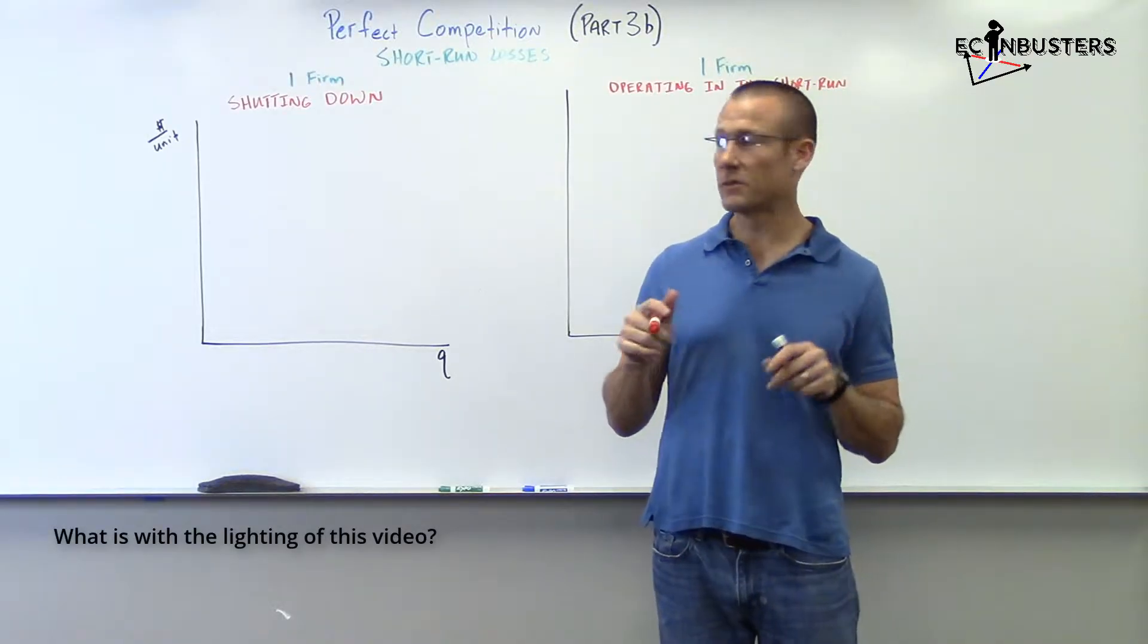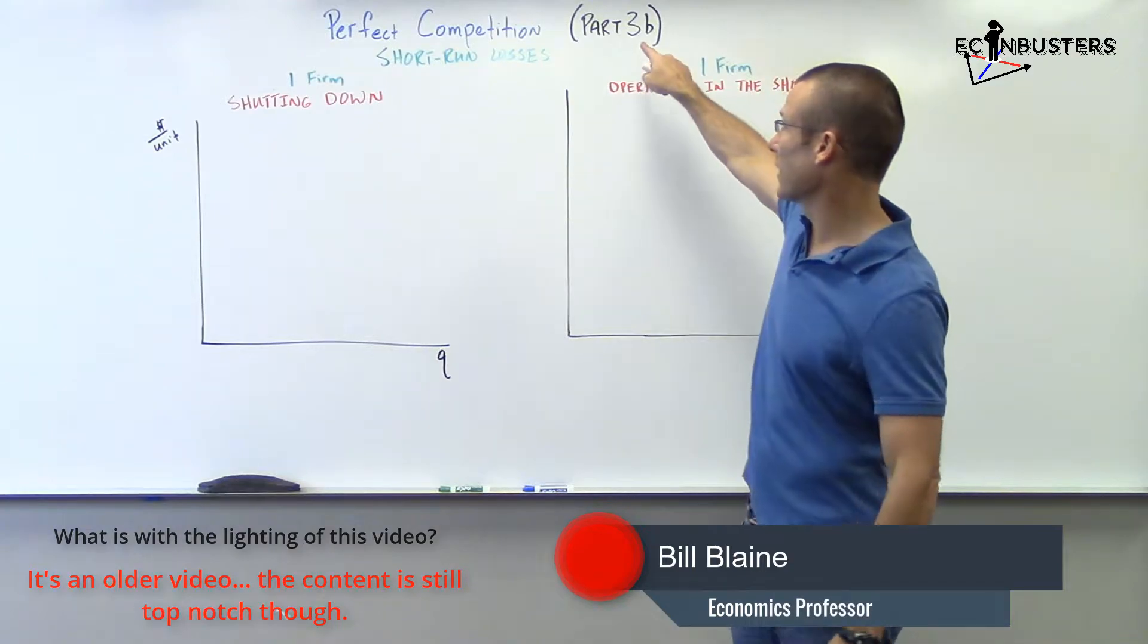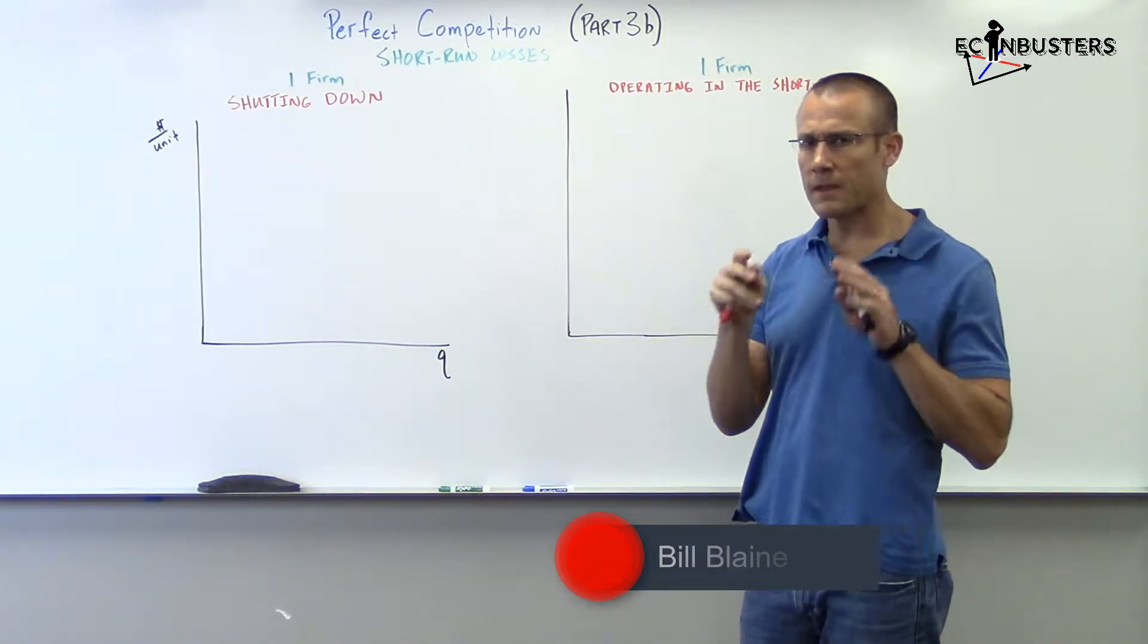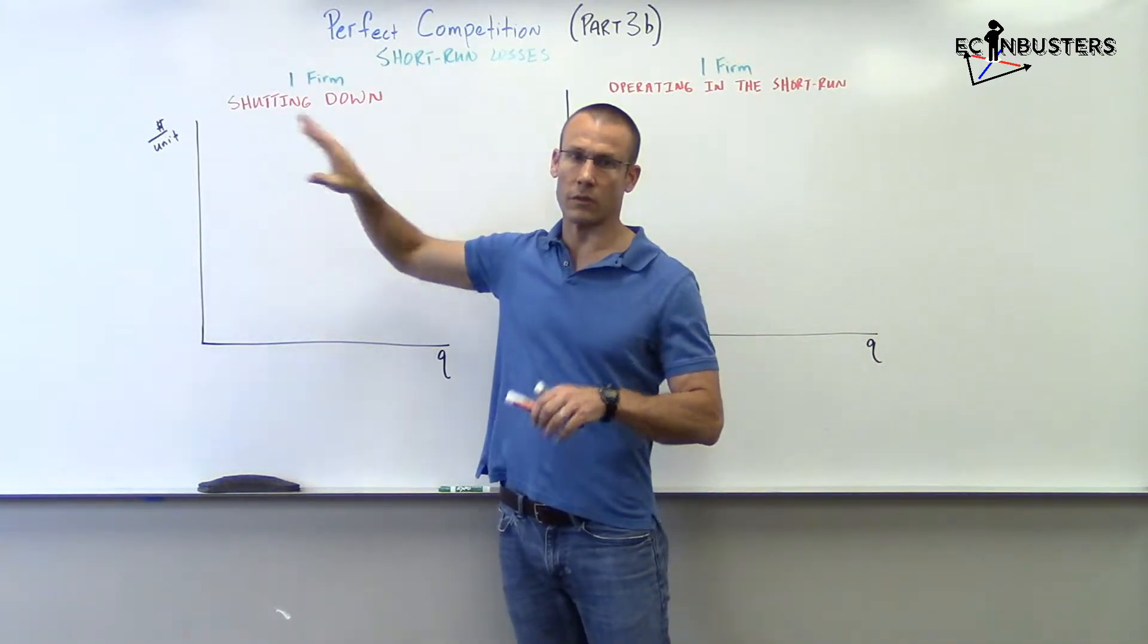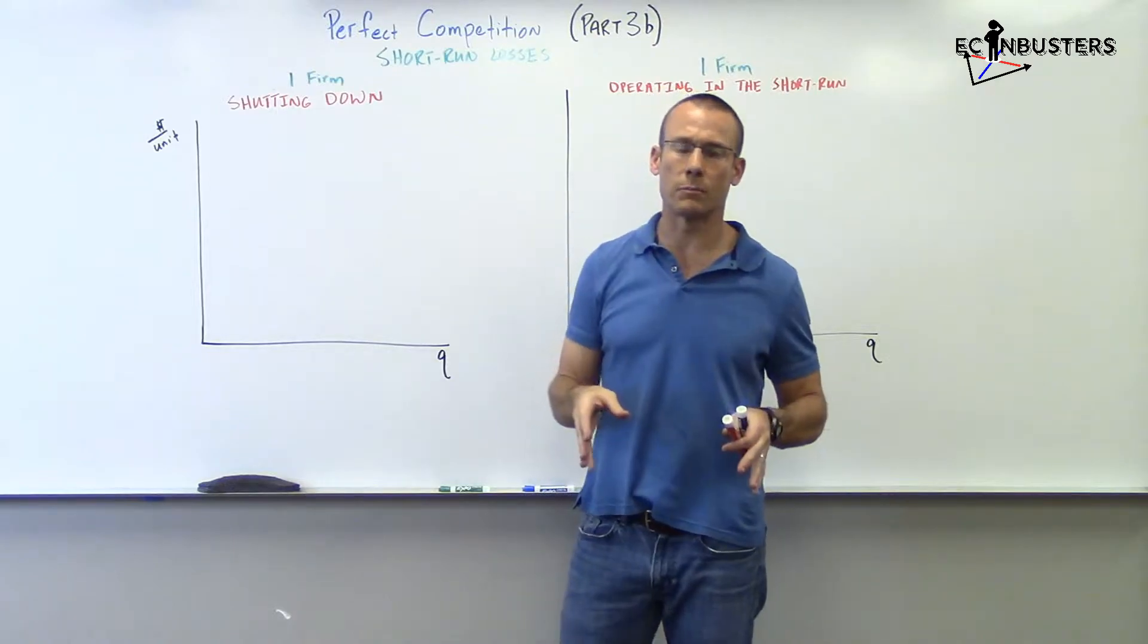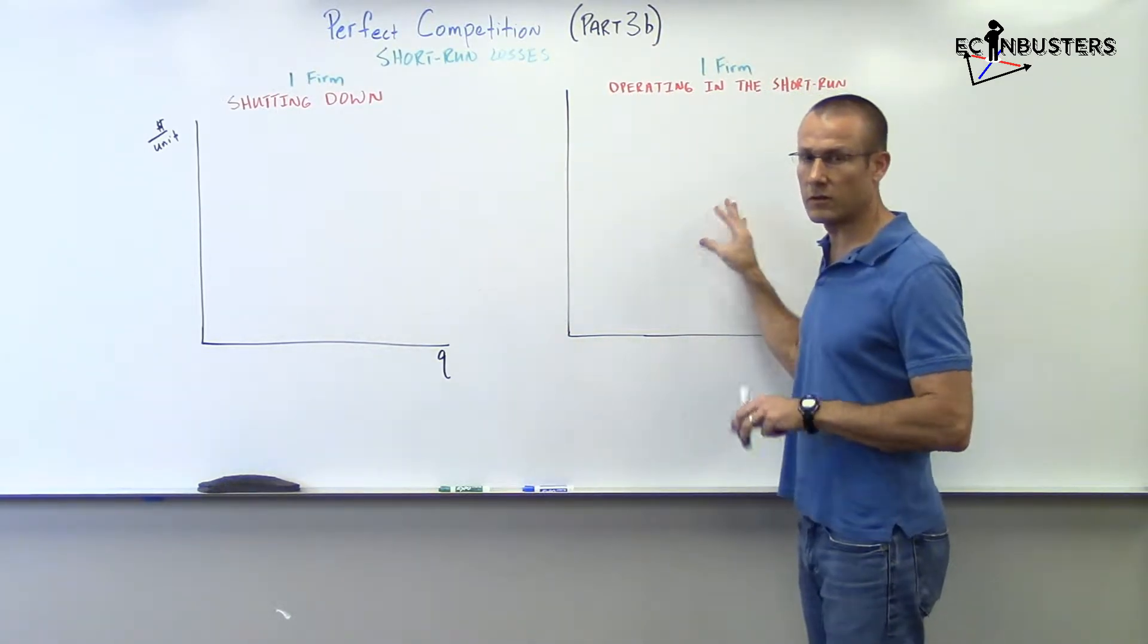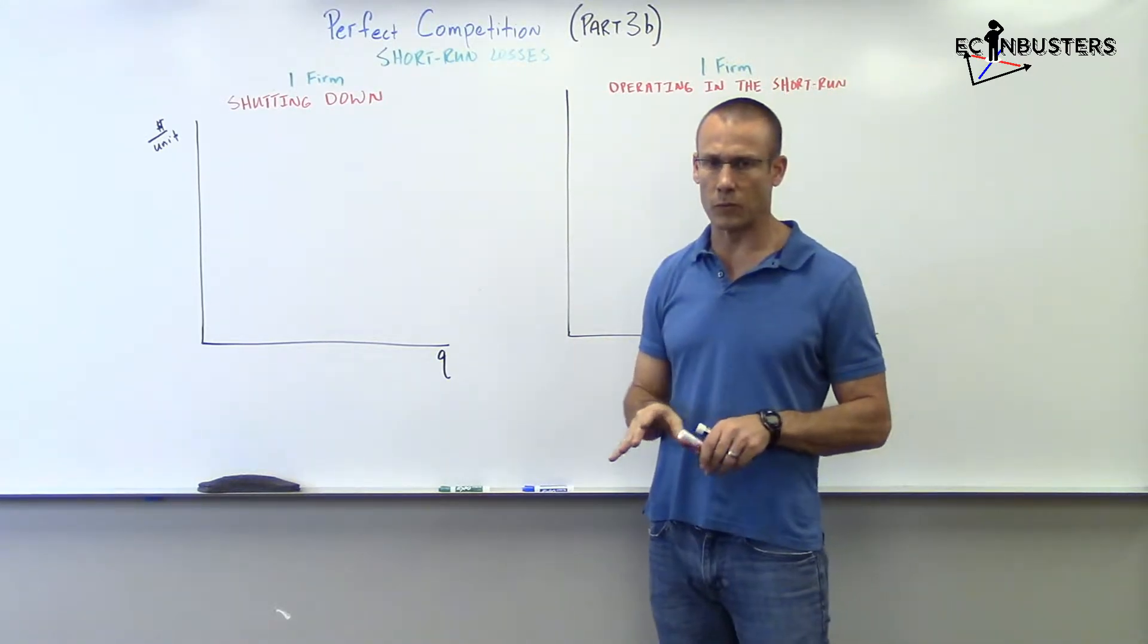Hey, everybody. Still on Perfect Competition. We're doing short run losses. We just shot a video on it. This is kind of 3B, the second part of short run losses. In this video, we're going to talk about a firm that's shutting down in the short run. The losses are so bad, they're just going to shut the plant down and how they make that decision. In this situation, they're making losses, but they're going to go ahead and operate in the short run.